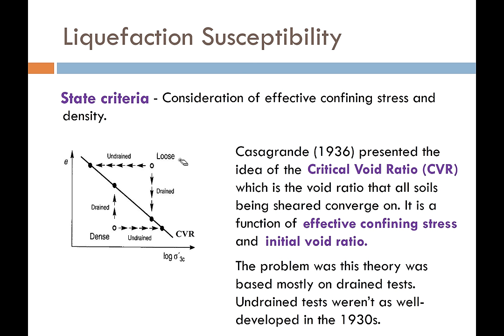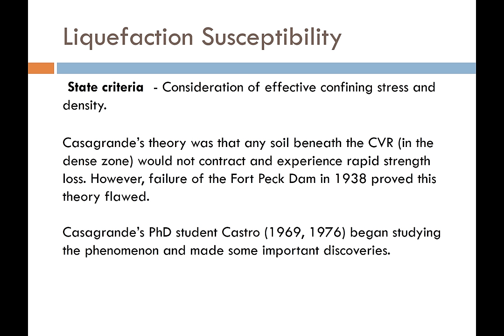This theory was widely accepted in the early to mid-1930s, but there was a problem. The Fort Peck Dam in 1938 failed — it was designed based on this theory — and it fell due to liquefaction. This remained a mystery for a few decades until Casagrande's PhD student, Castro, published results in 1969 and then 1976 from his PhD work, making several important discoveries.